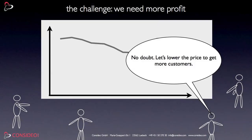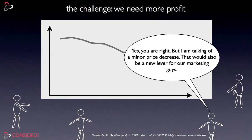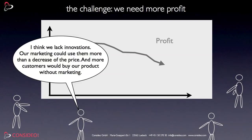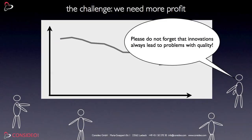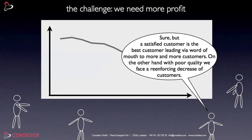The first proposal is to lower the price to get more customers. That, of course, would lower the margin of the product, but it would also foster marketing. Another proposal is to provide further innovations to foster marketing even more, but innovations would also bring some problems to quality. Nevertheless, quality is said to be of minor influence. On the other hand, marketing triggers a word of mouth effect, automatically leading to more and more customers.